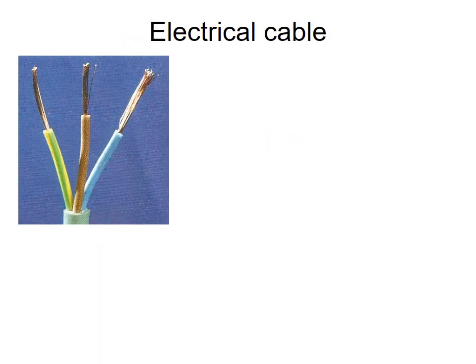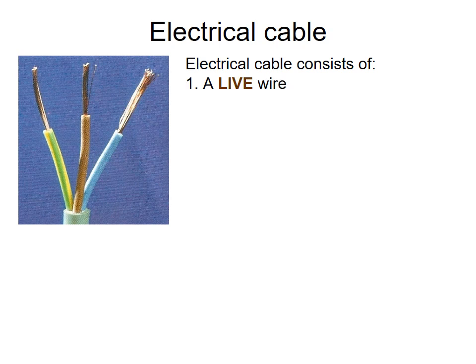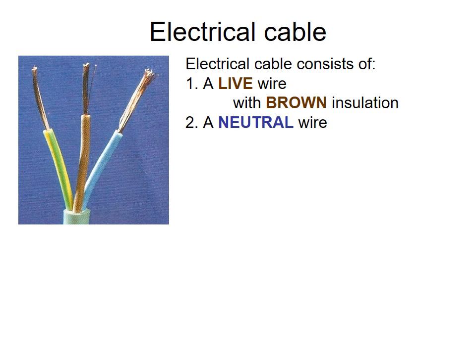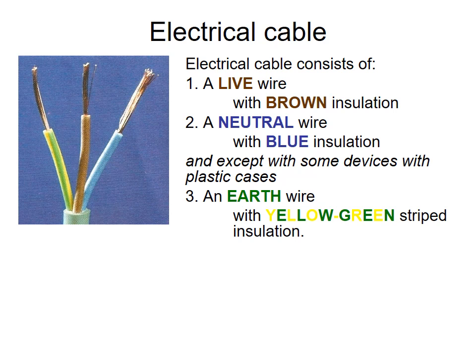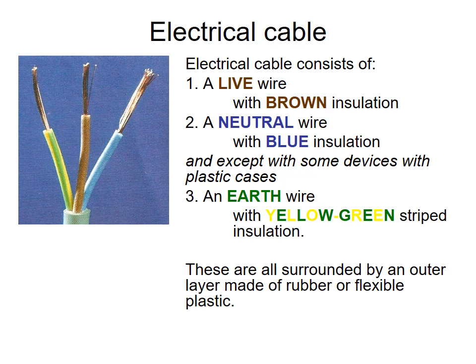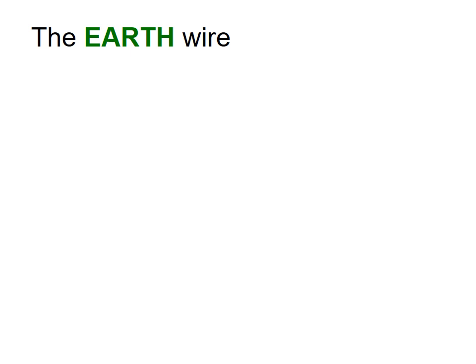If we pulled an electrical wire to pieces, we'd see that the cable consists of a live wire which is brown, a neutral wire which is blue, and — except with some devices with plastic cases — an earth wire. The earth wire has yellow-green striped insulation. All of these are surrounded by a layer of rubber or flexible plastic insulation, which stops the wire causing burns, electrocution, or melting of the outer casing.